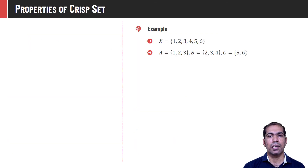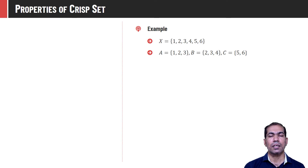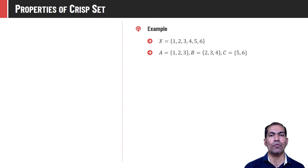Before we proceed, first understand the sets we are going to use for the examples. The universal set capital X contains elements 1, 2, 3, 4, 5, 6. Three crisp sets are derived from that: A = {1, 2, 3}, B = {2, 3, 4}, and C = {5, 6}.